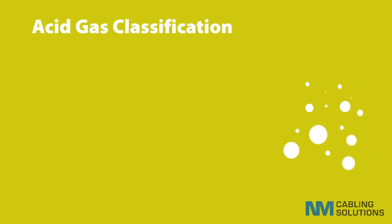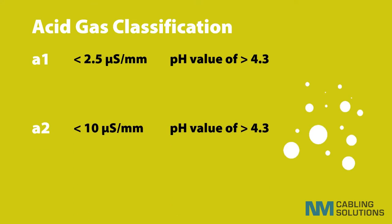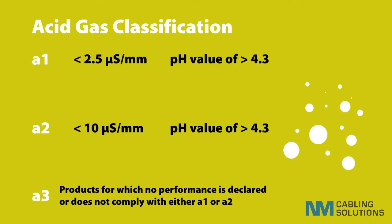The classification a1 is less than 2.5 micro Siemens per millimetre and a pH value of no less than 4.3. a2 is less than 10 micro Siemens per millimetre and a pH value of no less than 4.3. a3 is for products where no performance is declared or which do not comply with either a1 or a2. We trust this has clarified this topic for you.